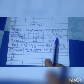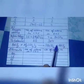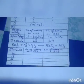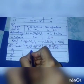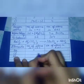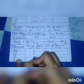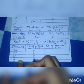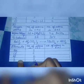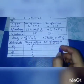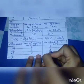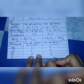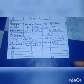Again compare the number of atoms by making a table. On the LHS: barium has one atom, chlorine has two atoms, aluminium has two atoms, sulfur has three atoms, and oxygen has twelve atoms. On the right hand side: barium has three atoms, chlorine has three atoms, aluminium has one atom, sulfur has three atoms, and oxygen has twelve atoms.